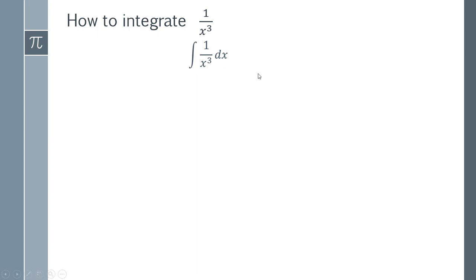And when you have a power on the bottom that's a positive power, if you want to move it to the top you just swap the sign. So in this case 1 over x cubed is actually exactly the same as x to the power of minus 3.